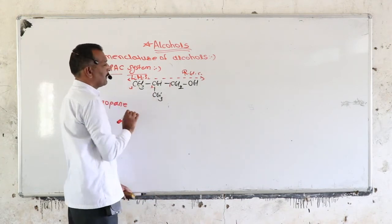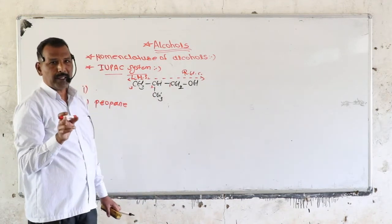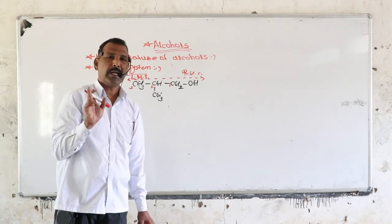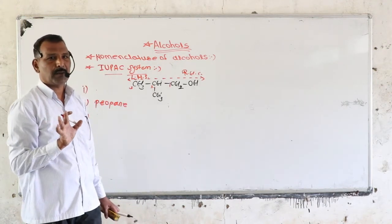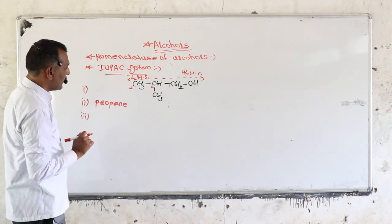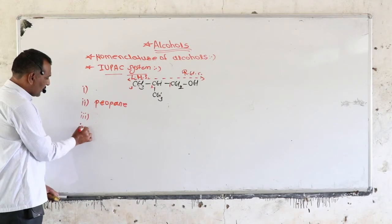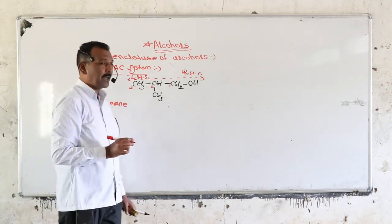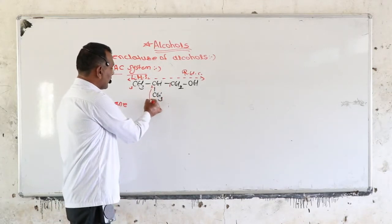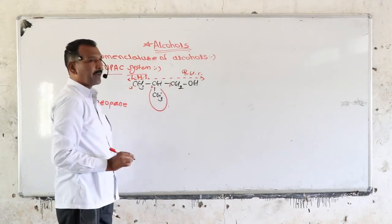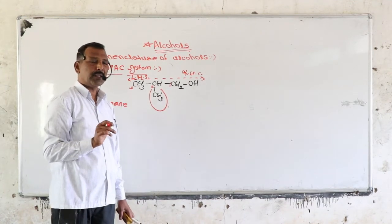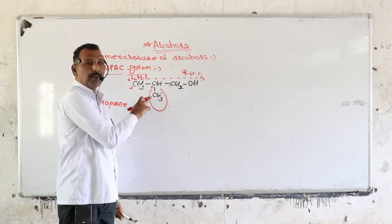Next rule: we have to identify the side chain. There is one side chain present, and the group is a methyl group. We also have to identify its position. This methyl group is present on carbon number 2.